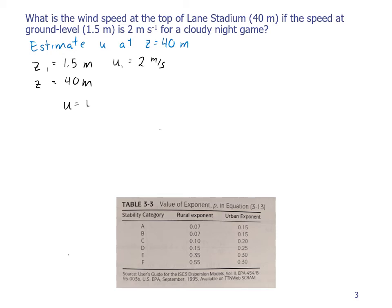u equals u1 times z over z1 to the p power. We need to know what p is. Well, for a cloudy night, that means we're at class D. We're going to say that we're in a rural area.